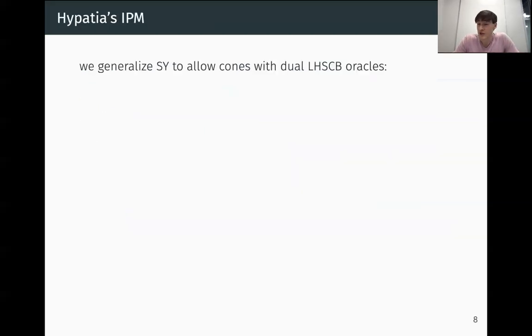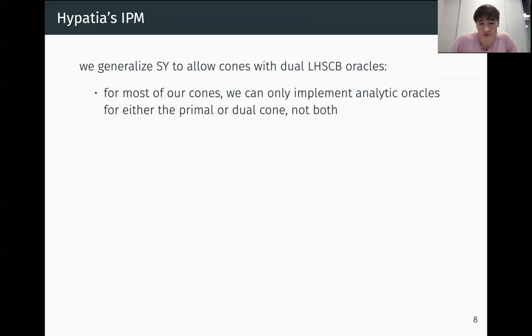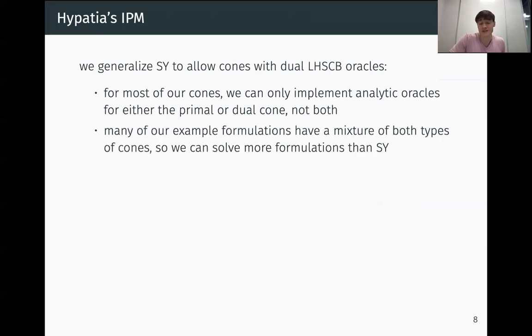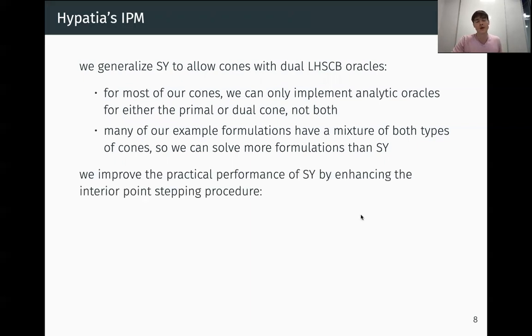In a recent paper, we improved the generality of this algorithm and also the performance. First of all, we generalize it by allowing cones with dual LHSCB oracles. For most of our cones, we can only actually implement analytic oracles for either the primal cone or the dual cone, but not both. We just don't know LHSCBs for both. This is important because for many of our example formulations, we actually have a mixture of both types of cones, those with primal oracles and those with dual oracles. This means we can actually solve more formulations than Skajaa-Ye can solve.